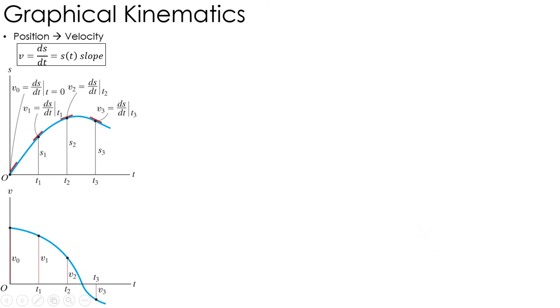So, for example, if I have position as a function of time and I want to go to velocity, velocity is just the time derivative of position, which, if you all remember from calculus, is the slope of the position graph. So if I'm given position as a function of time, I can just take derivatives, which is the slopes to figure out what the velocity is.